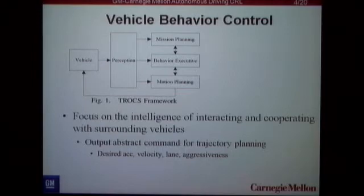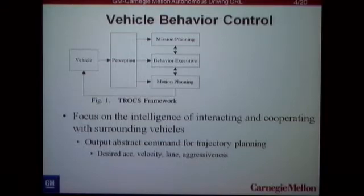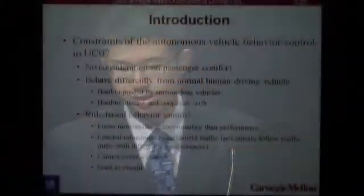Here's the framework of our autonomous vehicle. We have the perception system, and for the intelligence parts we have mission planning, which acts like a GPS device, behavior executive, and motion planning. The motion planning's main role is trajectory generation. The behavior executive is what we are working on — it's focused on the intelligence of interacting and cooperating with surrounding vehicles. Its outputs include desired acceleration, desired velocity, the lane you want to merge to, and parameters such as aggressiveness.